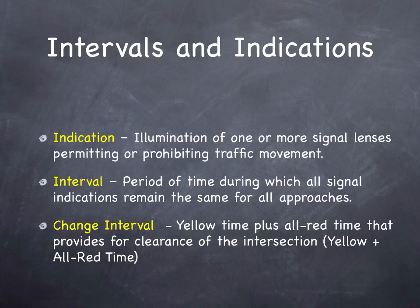There's a change interval — the yellow time plus the all-red time — that provides for clearance of the intersection. The yellow light means stop if you can. The all-red ensures that anybody who has entered the intersection on a yellow still has time to clear before the light changes to green. It's a safety measure.